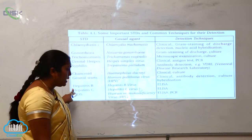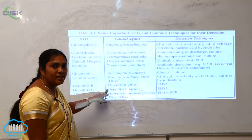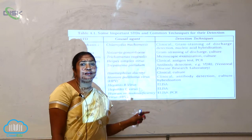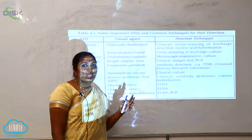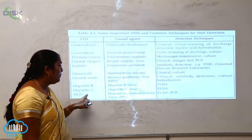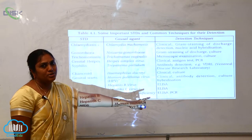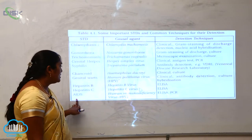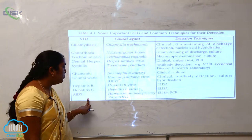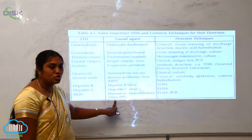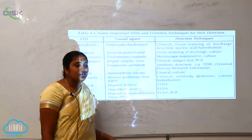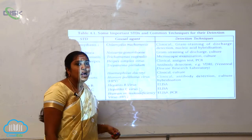Hepatitis B is caused by Hepatitis B virus and Hepatitis C by Hepatitis C virus; both are detected using ELISA. AIDS — Acquired Immune Deficiency Syndrome — is caused by the Human Immunodeficiency Virus (HIV), and detection techniques include ELISA and PCR.